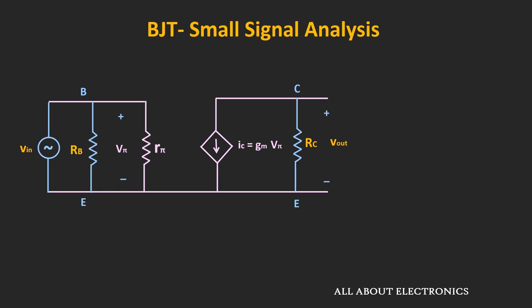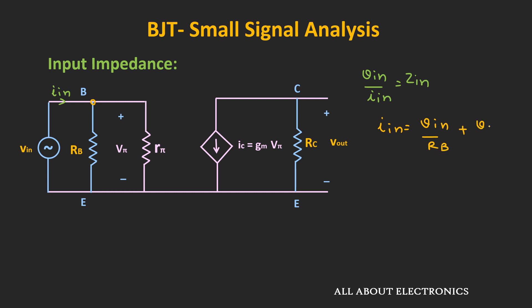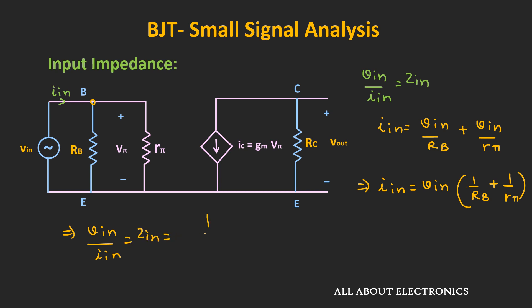Now let's find the expression for input impedance. If Vin is the input voltage and Iin is the input current, the ratio of input voltage to input current equals the input impedance. Applying KCL at the input node, Iin equals Vin divided by Rb plus Vin divided by Rπ. Therefore, the input impedance equals 1 divided by (1/Rb + 1/Rπ), which is the parallel combination of Rb and Rπ.